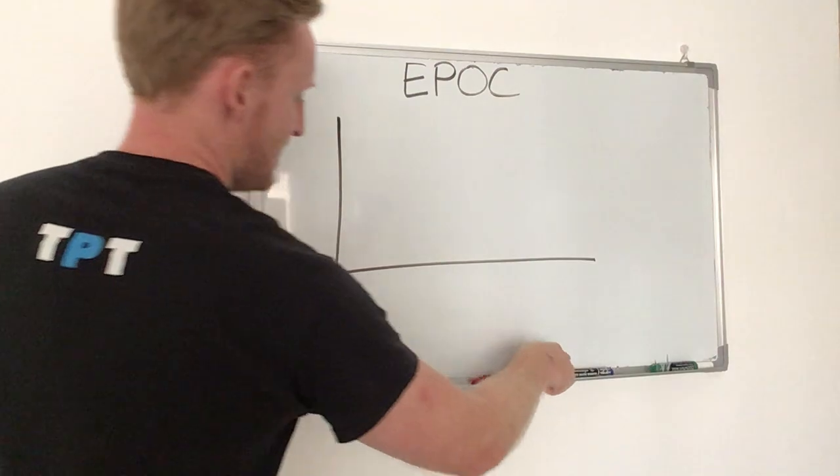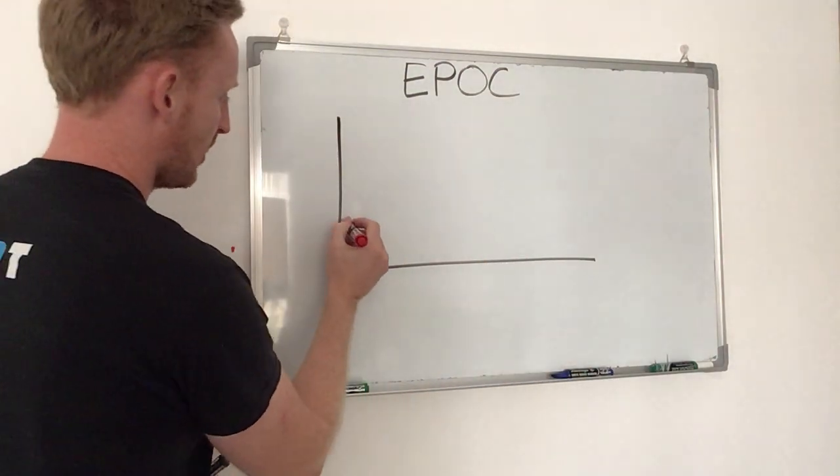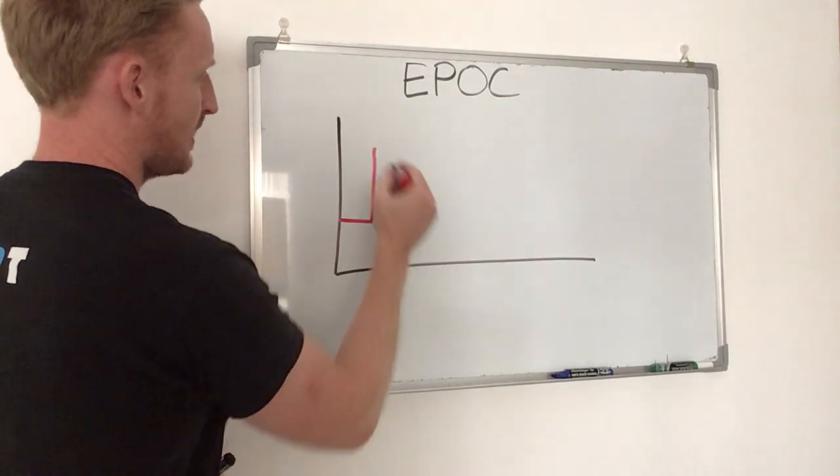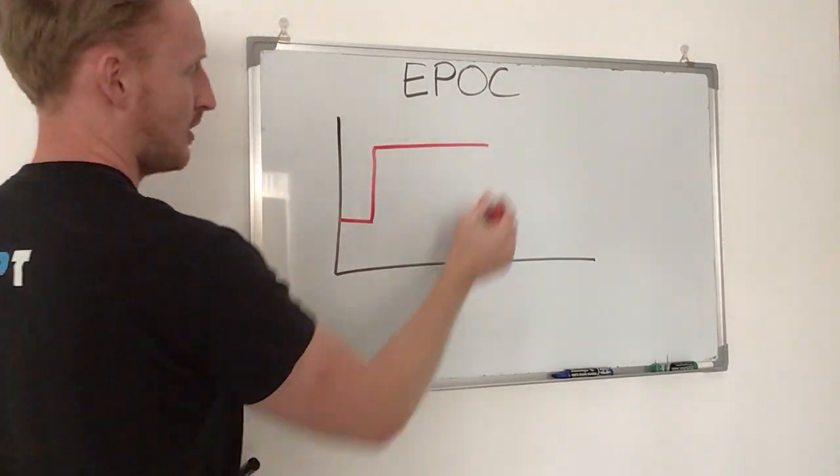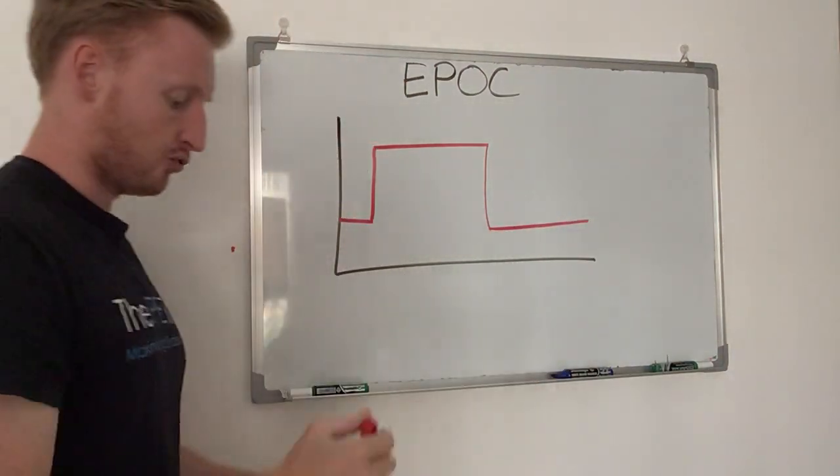So what does this look like? If we take the red line as exercise intensity, we start at rest, it spikes, and then we sustain that exercise, for example a run, until we stop completely and it remains at rest.